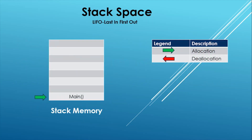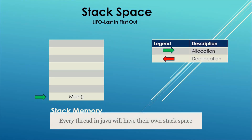Now let's take an example in our Java program. Suppose we have one main method and three more functions which the main method is calling. When the program starts, the main method will be added to the stack. One thing to note is that all threads in Java will have their own JVM stacks provided by the JVM itself, so unlike heap memory, the stack will not be shared. Each and every thread will have their own stack space.